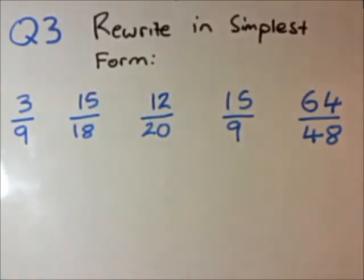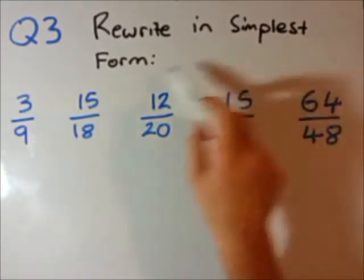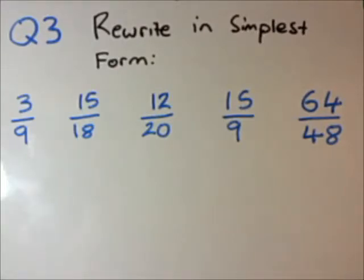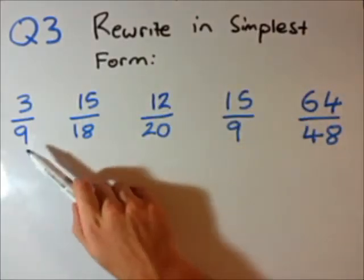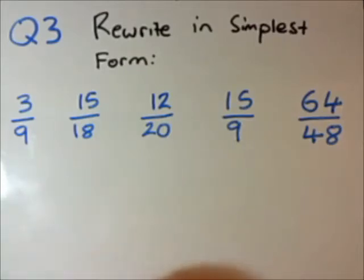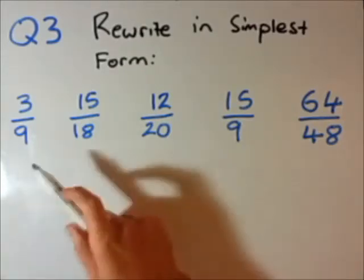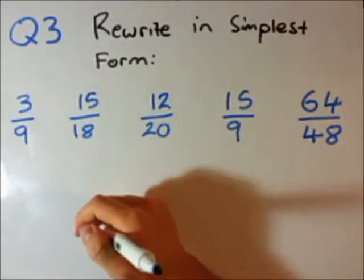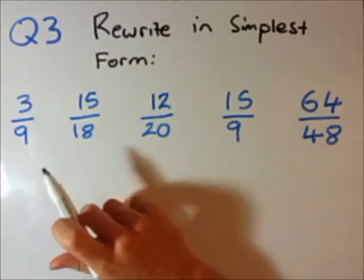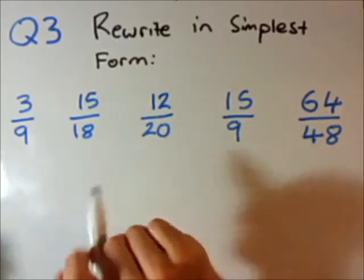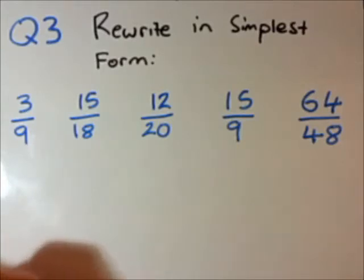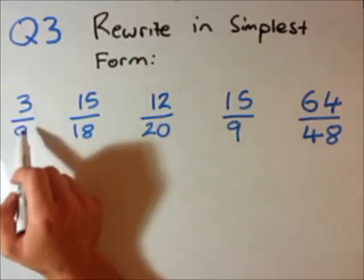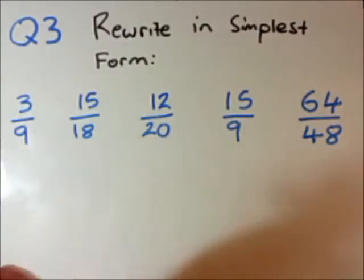Question 3 looks at rewriting fractions in what they call the simplest form. You're going to use the same trick as questions 1 and 2 — timesing or dividing top and bottom, the numerator and denominator, by the same number. What do we mean by simplest form? So we've got 3 over 9. Say you've got a test out of 9 and you get 3 marks right — that's 3 out of 9. To write it in simplest form, you need to get these numbers as small as possible. In order to do this, you need to look at highest common factors — that's the highest number that goes into both top and bottom.